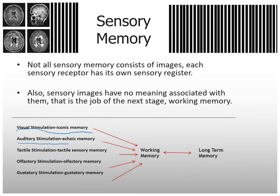Auditory stimulation goes through echoic memory. Tactile stimulation is touch. Olfactory — which we just learned about in the last unit — is your smell. And gustatory is taste. Those are your five senses — all raw data, each processed through its own register, and then sent to working memory.